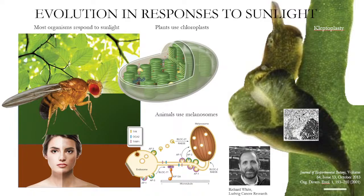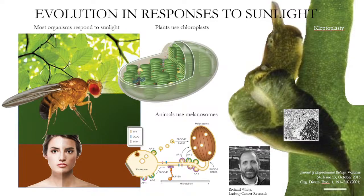How can a chloroplast exist outside of a plant and live for many months inside the sea slug? We do not know — it's very, very strange. My colleague, who is a cancer biologist, would like to understand how these chloroplasts can live and function in the sea slug, because he thinks it might help us understand more generally how melanosomes travel in our skin, linking this to the study of skin cancer. But we have not started this work yet. We have no results, and we have no sea slugs — we need to send our students to the sea to collect them.